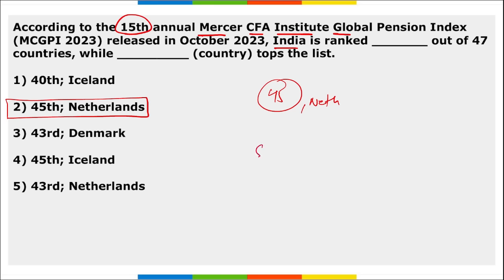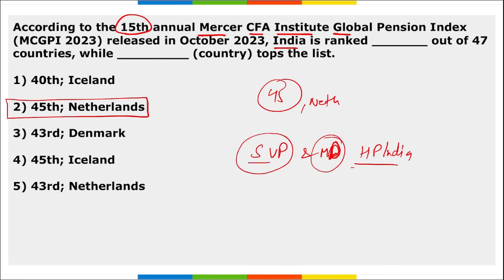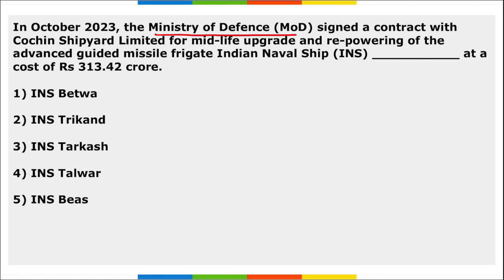Ipsita Das Gupta has been appointed as senior vice president and managing director of HP India. The Ministry of Defense signed a contract with Cochin Shipyard Limited for midlife upgrade and repowering of the advanced guided missile frigate INS Beas at a cost of ₹313.42 crore. INS Beas is the first Brahmaputra class frigate to be repowered from steam to diesel propulsion.